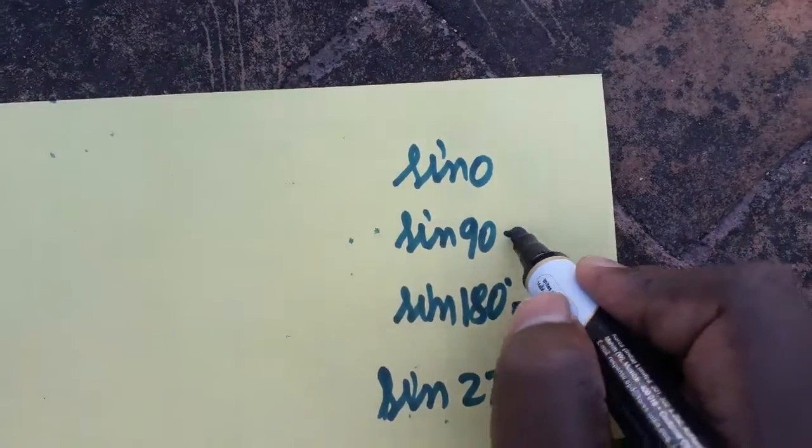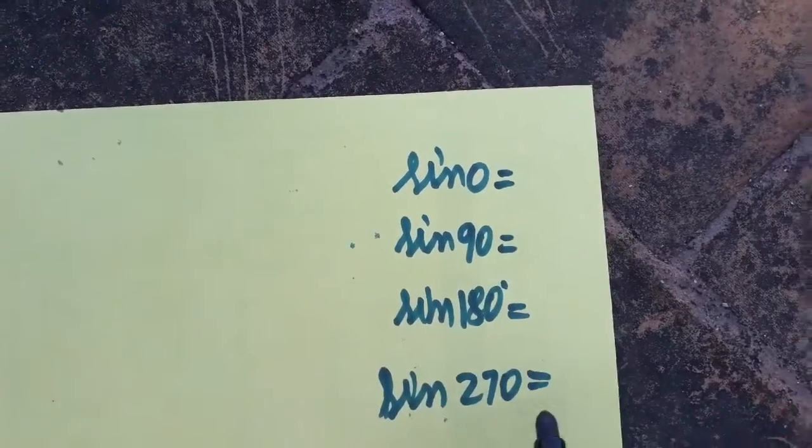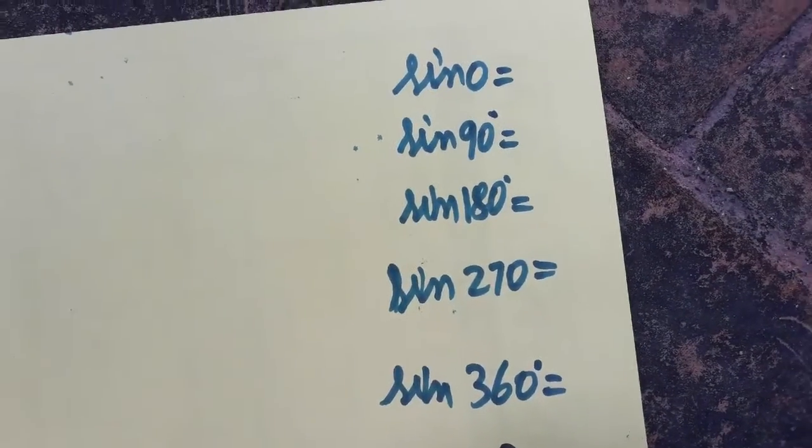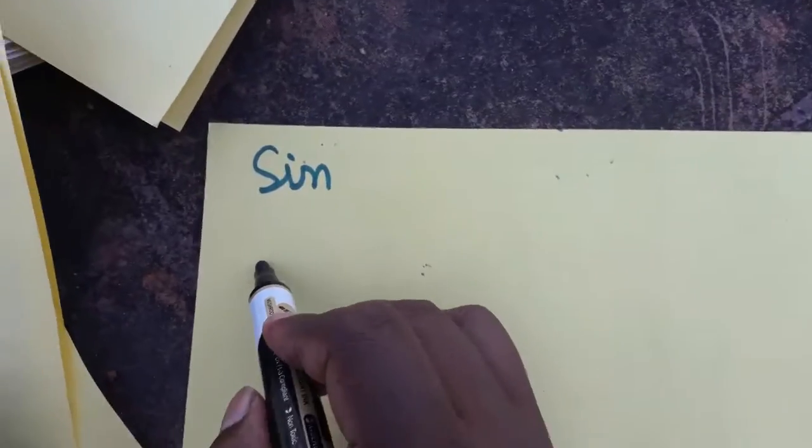In this video I am going to show you without memorizing how we can learn the values: sin 0 degree, sin 90 degree, sin 180 degree, sin 270 degree, sin 360 degree. This value no need to memorize, it's very simple thing I am going to teach you.